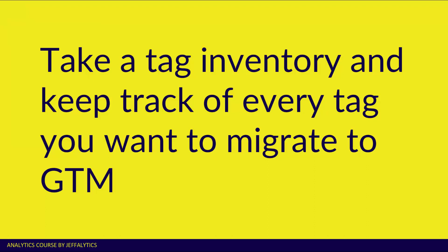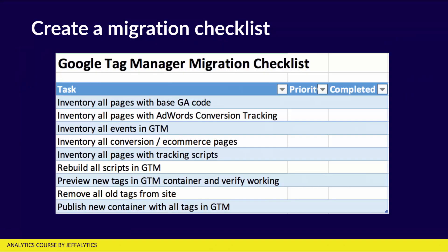You want to take a tag inventory and keep track of every tag that you want to migrate to GTM. Here's a sample of what a migration checklist might look like for you and your organization. You want to look at all pages with your base GA code, all pages that have AdWords conversion tracking, every event that you want to put in GTM, all your conversion e-commerce pages, and all your pages that have tracking scripts.